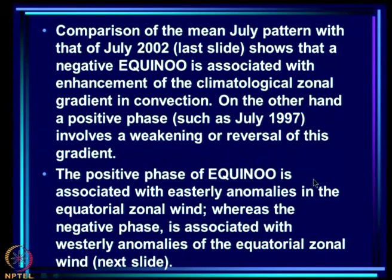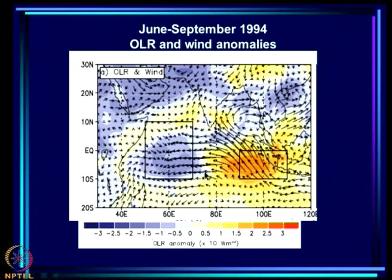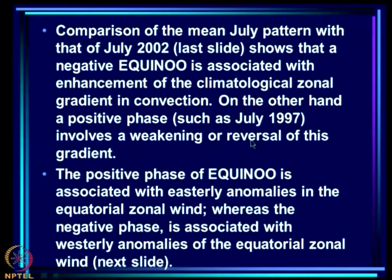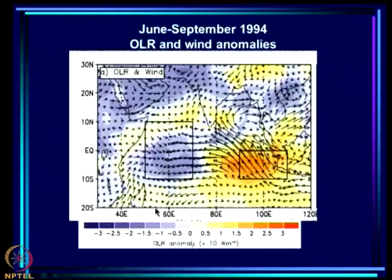The positive phase of EQUINOE is associated with easterly anomalies in the equatorial zonal wind, whereas the negative phase is associated with westerly anomalies. In a positive phase example, convection is suppressed in one region (positive OLR anomalies) and enhanced in another (negative OLR anomalies), and the wind is going towards the region where convection is enhanced — that is, the anomaly is from the east, or easterly. If the opposite were the case, the anomaly would be from the west going towards where convection is more, and therefore westerly.